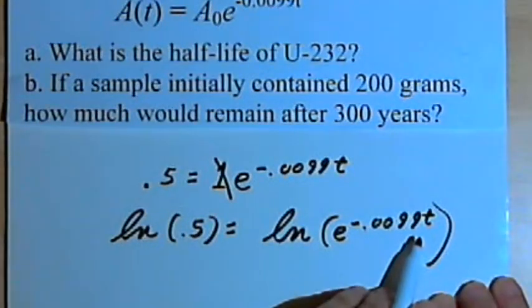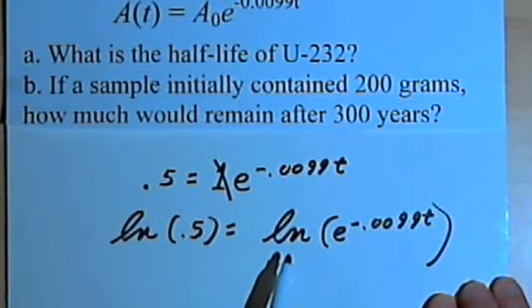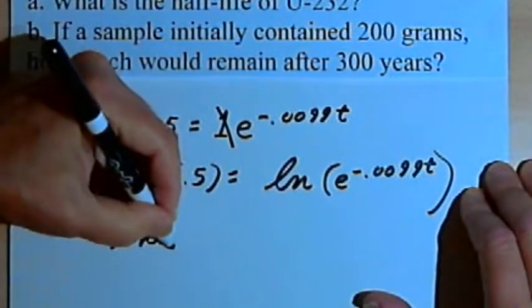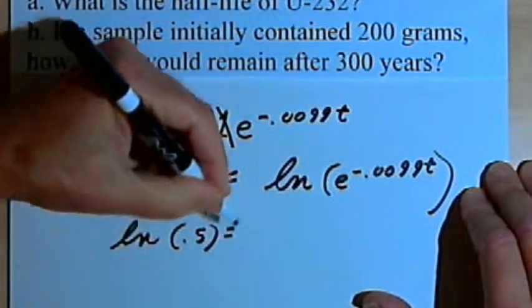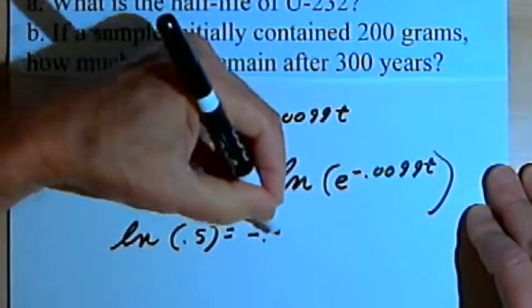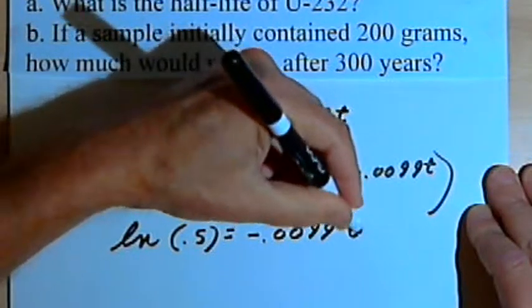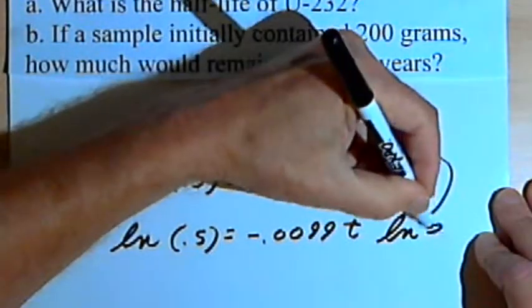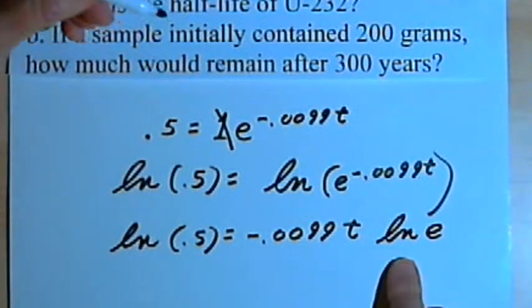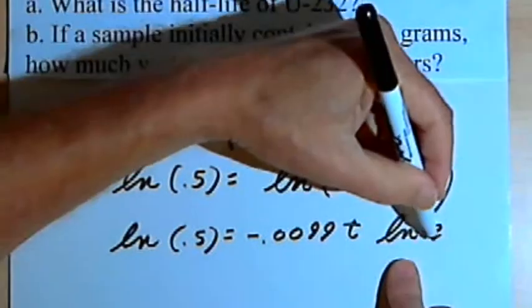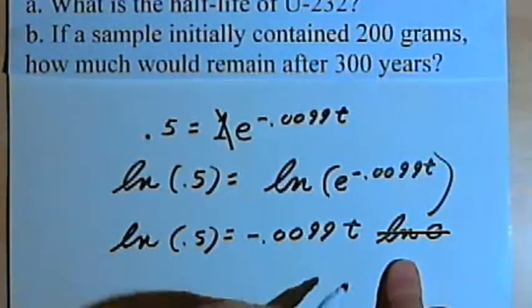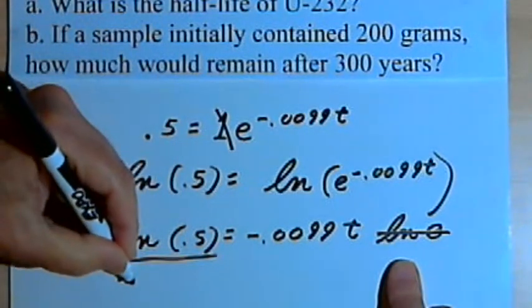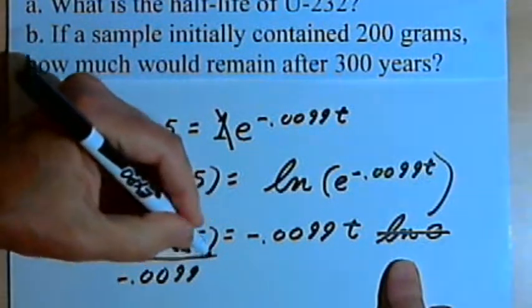I'll take this exponent and make it a coefficient for the logarithm. So now I'll have the natural log of 0.5 equals negative point 0.0099t times the natural log of e. Well the natural log of e is 1, so we'll cross that part out. I want to get the t by itself, so I'll divide both sides of the equation by negative point 0.0099.